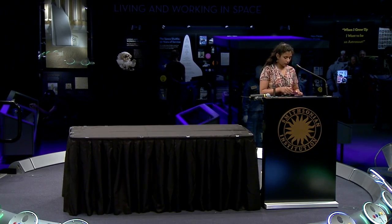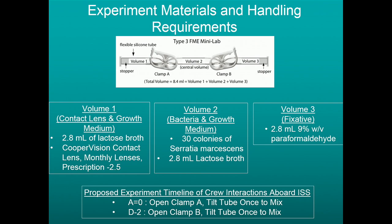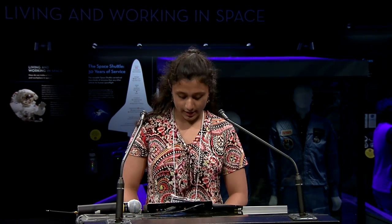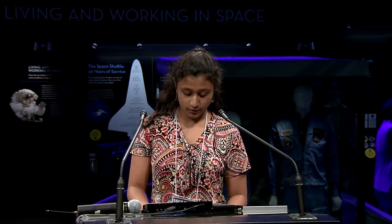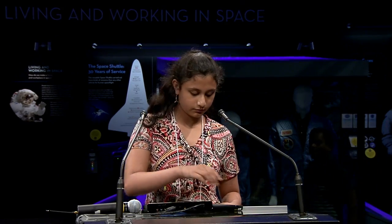Experiment materials and handling requirements. I'll be using a type 3 FME tube. The contact lens I'm using will have a prescription of negative 2.5, which is an average prescription. The growth medium I'm using is lactose broth and my bacteria is Serratia marcescens, which is a classroom-safe bacteria, which is why I chose it. The fixative I'm using is paraformaldehyde, which is going to preserve the biofilm structure.